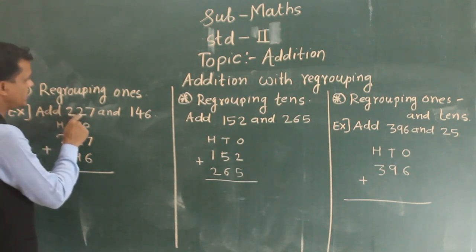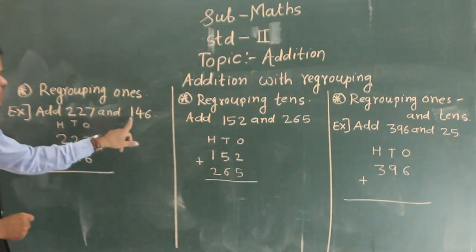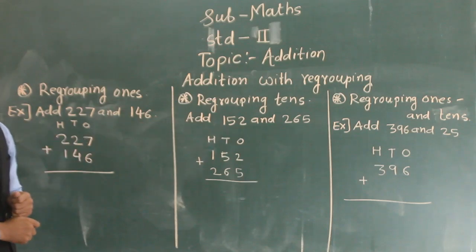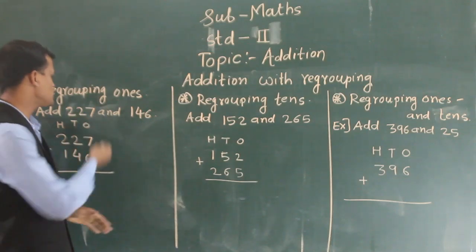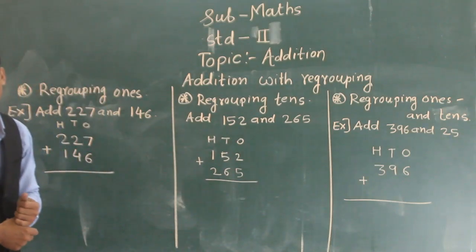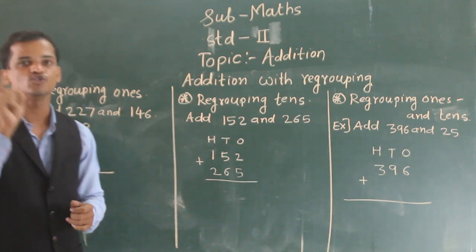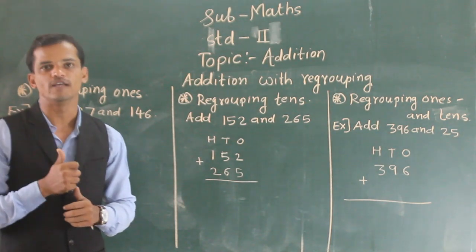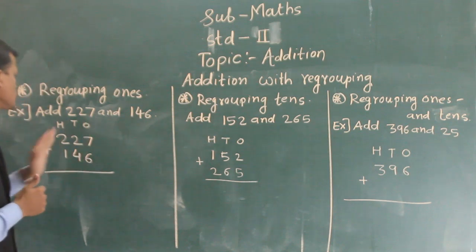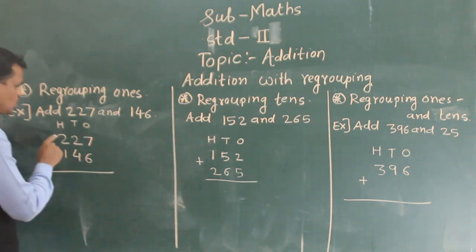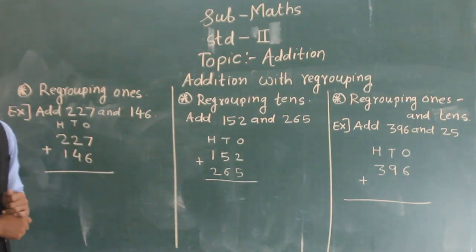add 227 and 146. Write that two numbers into the columns and then add. You have got to start from ones place. So see, I have written here 227 plus 146.